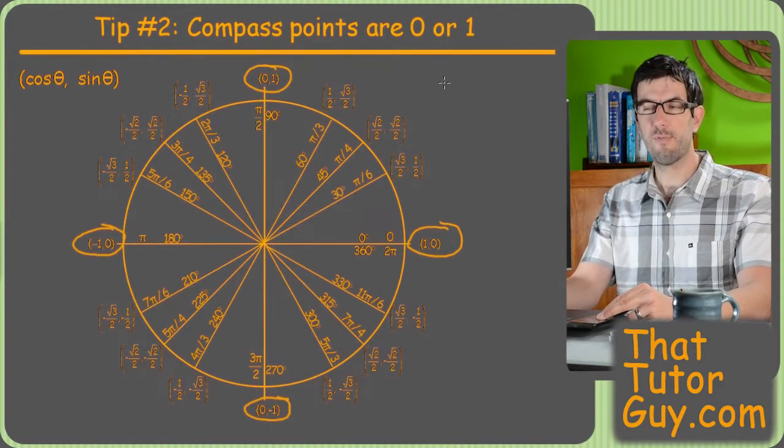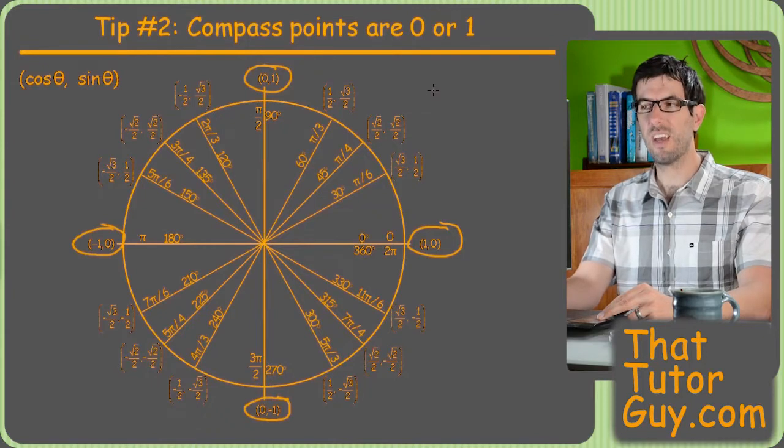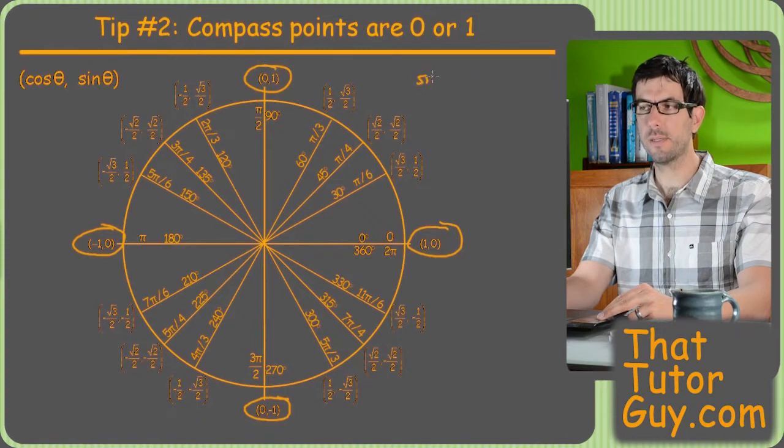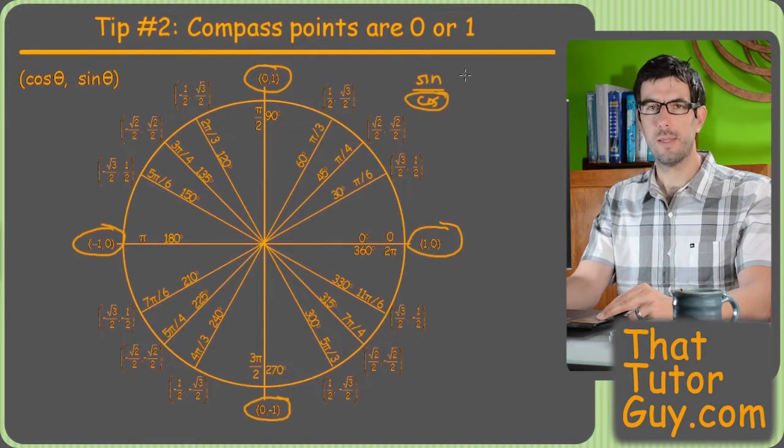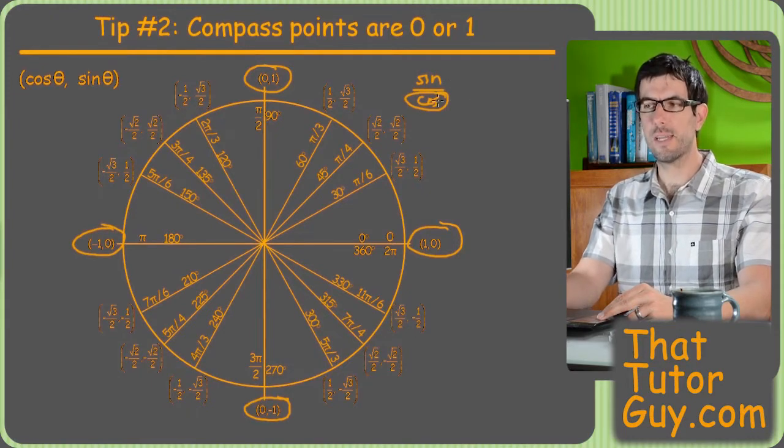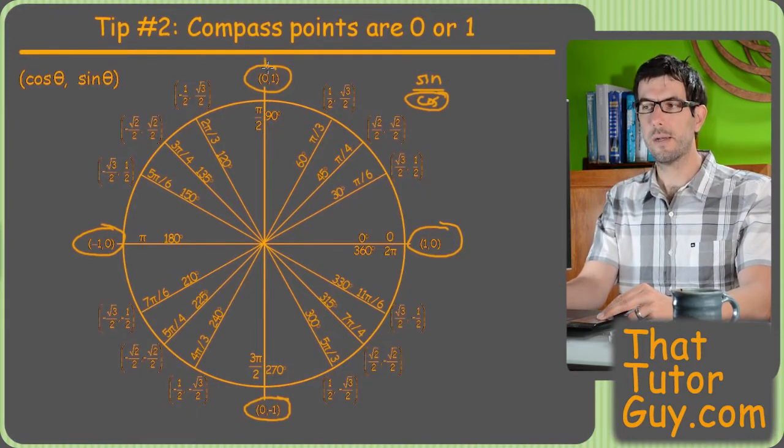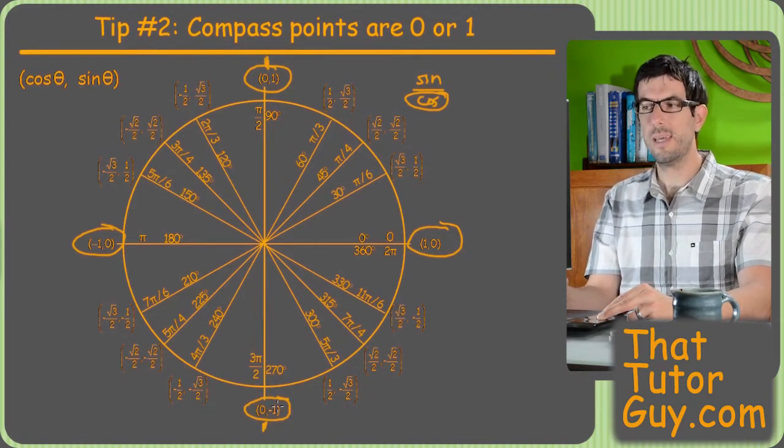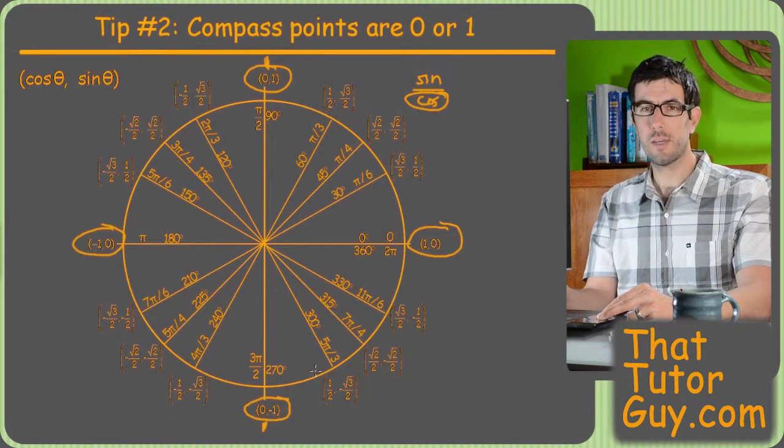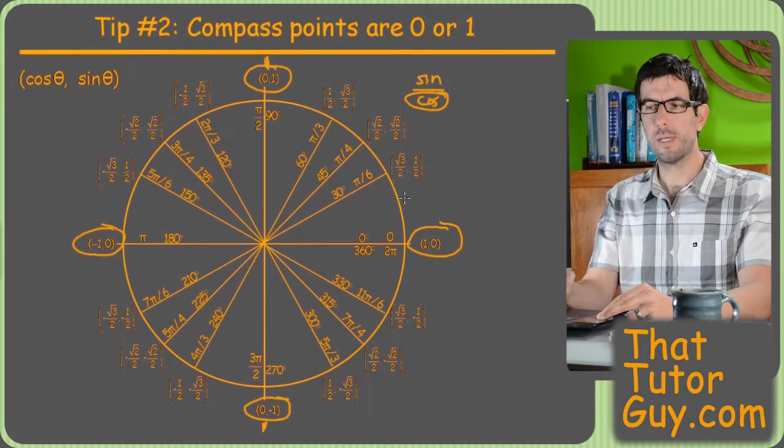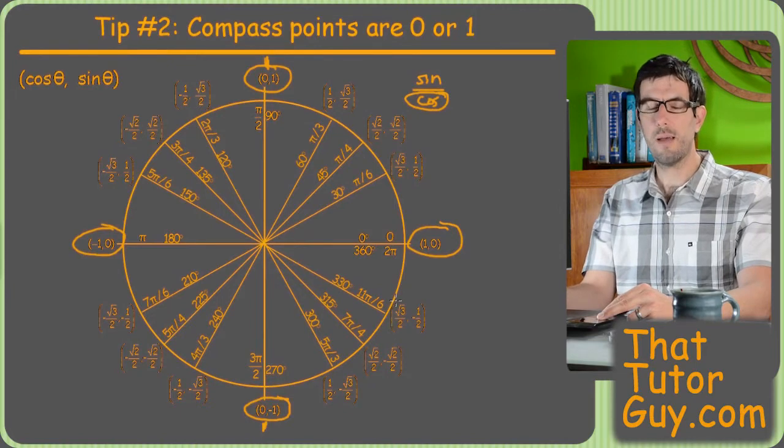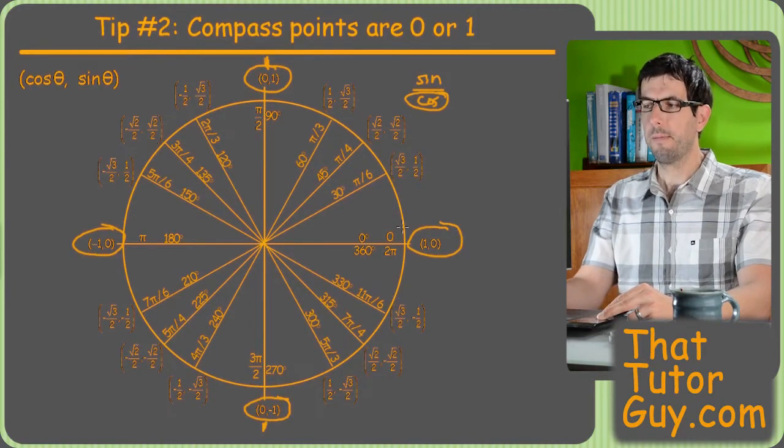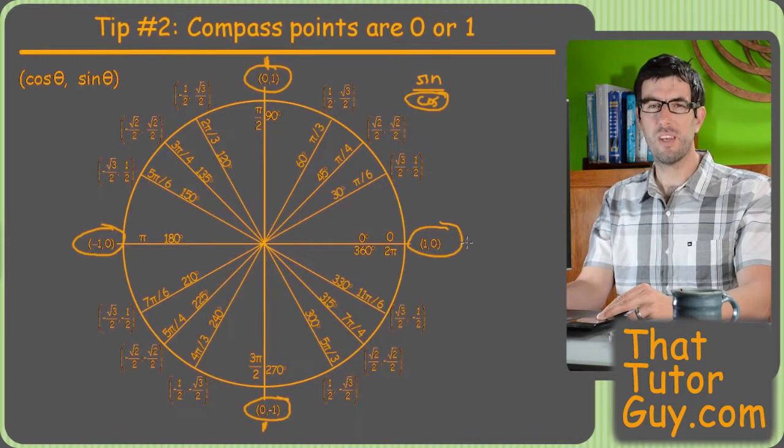What does get tricky for these four points are that some of the other functions, so like tangent is undefined some places, right, because tangent is sine over cosine, and therefore if cosine is zero, that means that tangent is undefined whenever cosine is zero. So up here and down here, cosine is zero, therefore tangent is undefined. Similar things happen for secant, cosecant, and cotangent at various compass points, so I talk a lot more about that in a video on my website.